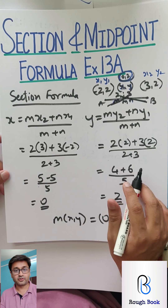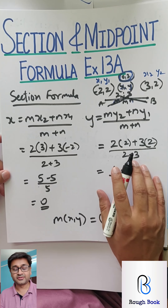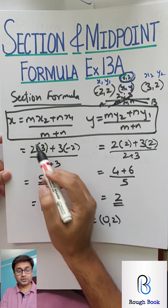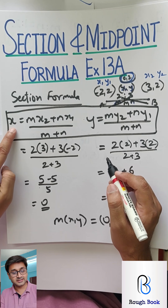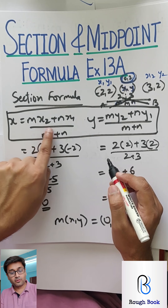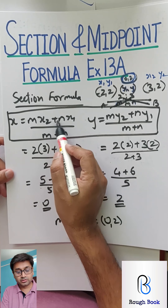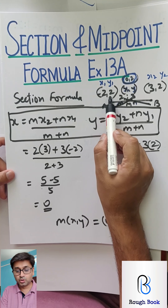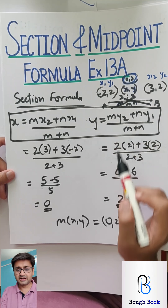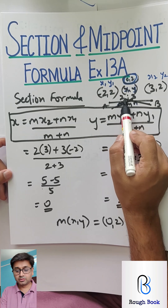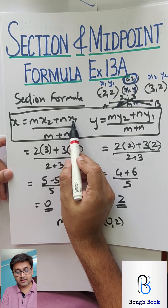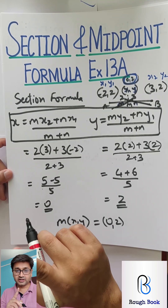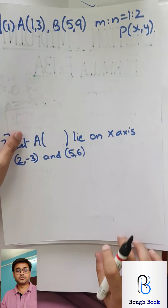There are 8 components total: X1, Y1, X2, Y2, M, N, X, and Y. Out of 8 components, 6 will be given and the remaining 2 you will find. Let's hit the first sum — I'm 100% sure you will be able to tackle it now. You have been given the ratio, A and B have been given, find P which is dividing AB in the ratio 1:2.